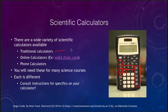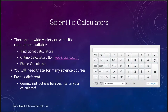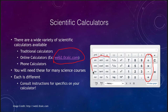There are traditional physical calculators, but you can also use an online calculator if you don't have one or your instructor doesn't require a specific type. One example is the website web2.0calc.com, which is a free online calculator. Like a traditional calculator it has basic functions — addition, subtraction, multiplication, and division — as well as trigonometric functions, exponents, and logarithms.